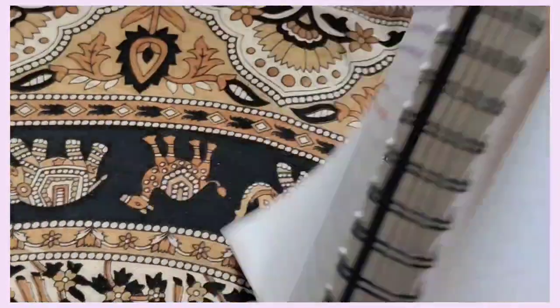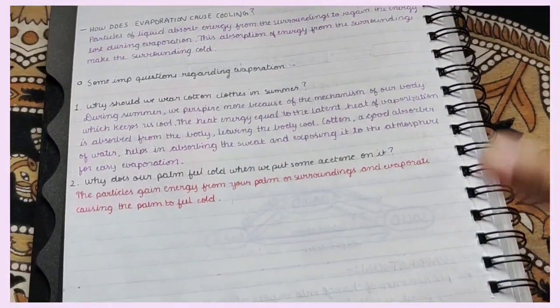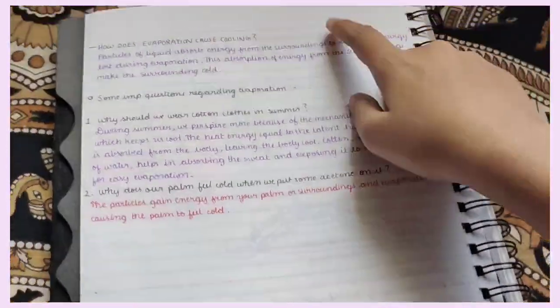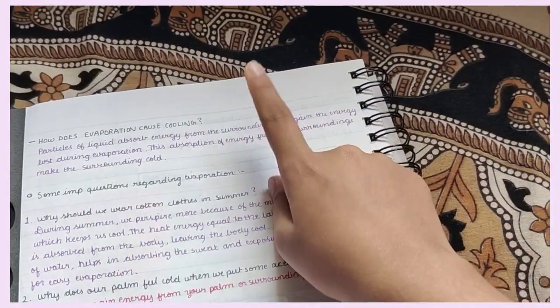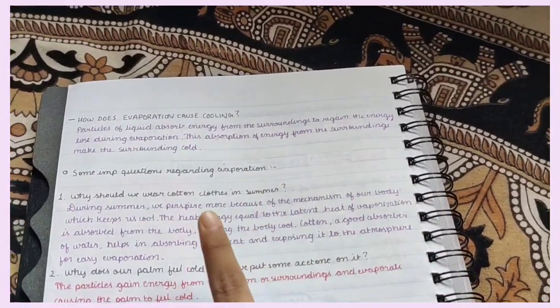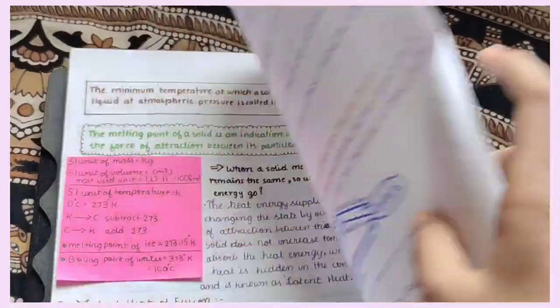This is the last page of my revision notes. Here I have some important questions regarding evaporation, schooling. Actually, there are other important questions that might come from this chapter too which I wanted to include in these notes, but then I didn't include it here. I have already written it in my other notes. If you want me to send that too, I can share that in future videos.